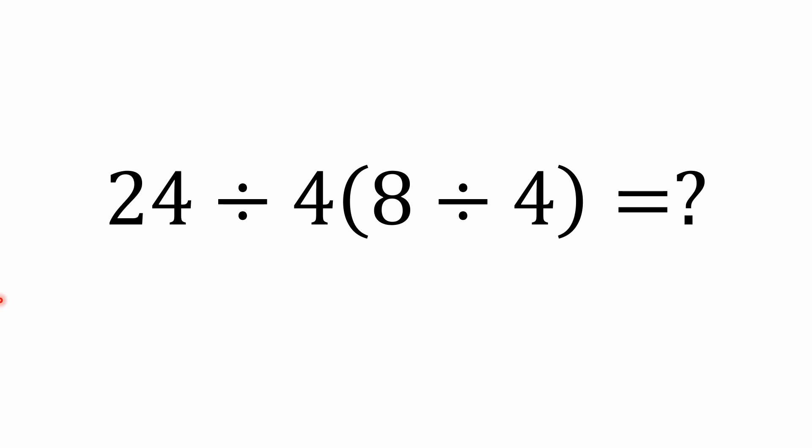It's 24 divided by 4 times the quantity 8 divided by 4, 8 divided by 4 inside of parentheses. So if you'd like to, you could try to solve this one on your own, and then we'll come back and discuss this one together.